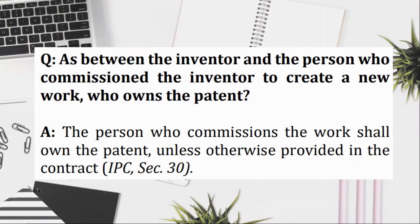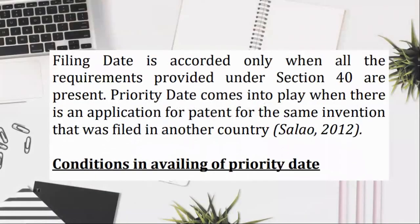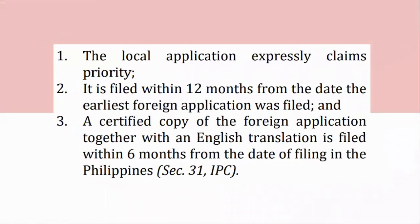Right of Priority: an application for patent filed by any person who has previously applied for the same invention in another country which by treaty, convention, or law affords similar privileges to Filipino citizens, shall be considered as filed as of the date of filing the foreign application, IPC, Section 31. Filing date is accorded only when all the requirements provided under Section 40 are present. Priority date comes into play when there is an application for patent for the same invention that was filed in another country. Conditions in availing of Priority Date: (1) the local application expressly claims priority; (2) it is filed within 12 months from the date the earliest foreign application was filed; and (3) a certified copy of the foreign application together with an English translation is filed within 6 months from the date of filing in the Philippines, Section 31, IPC.